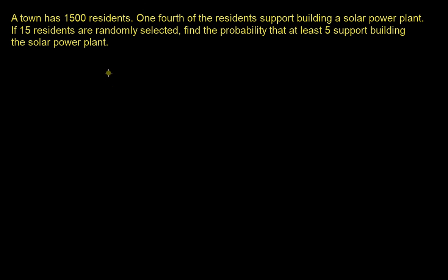We have 15 people being selected from this town, so our sample size n is 15, but the population N is 1,500. Because there is selection without replacement — meaning if Bob was selected, we wouldn't put him back into the pool — we select 15 unique people.